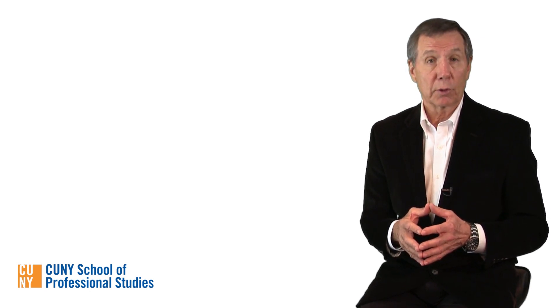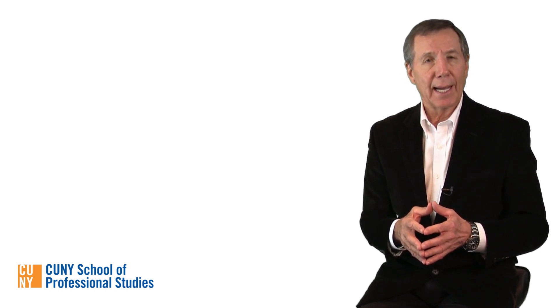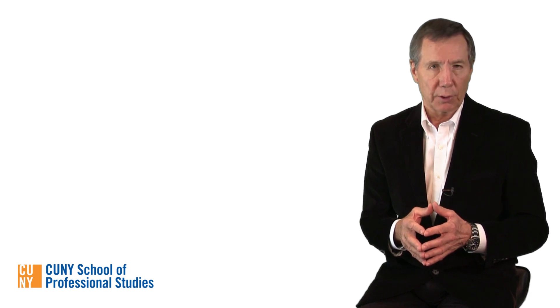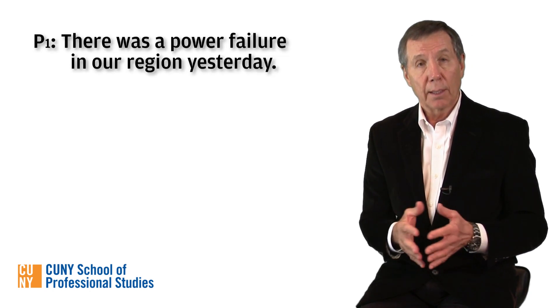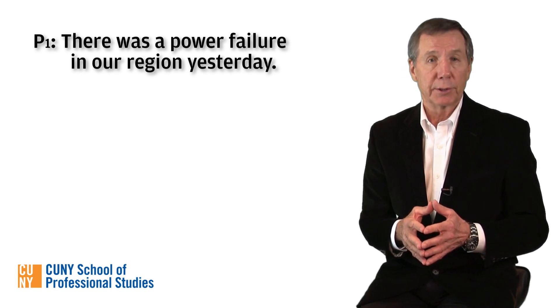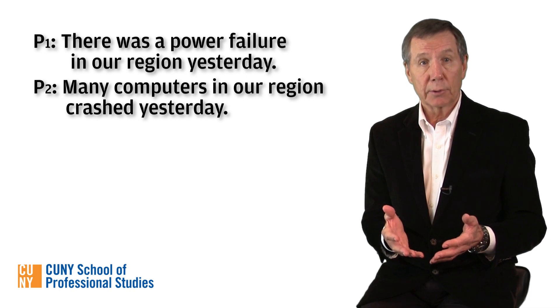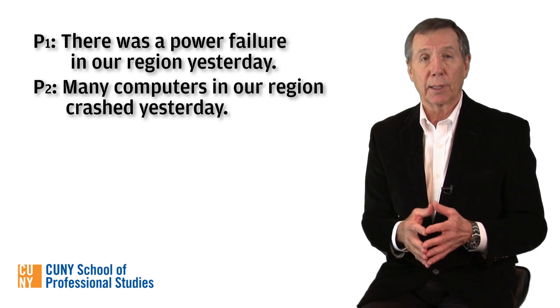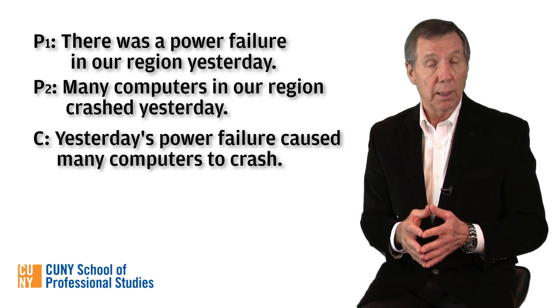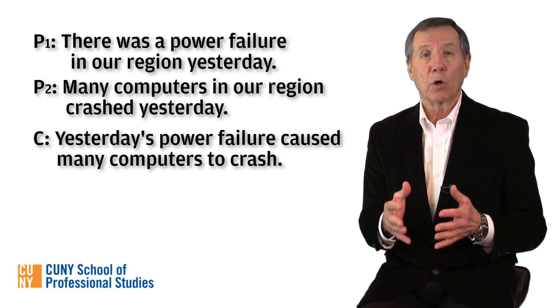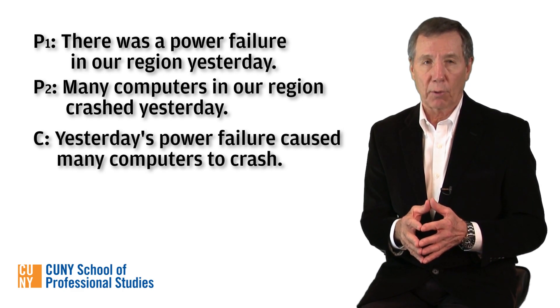When discussing cause and effect relationships, we need to understand the context in which the word 'cause' occurs. Cause often is used to describe something that has a specific outcome as a result, as in the following argument. Premise one: there was a power failure in our region yesterday. Premise two: many computers in our region crashed yesterday. Conclusion: yesterday's power failure caused many computers to crash.